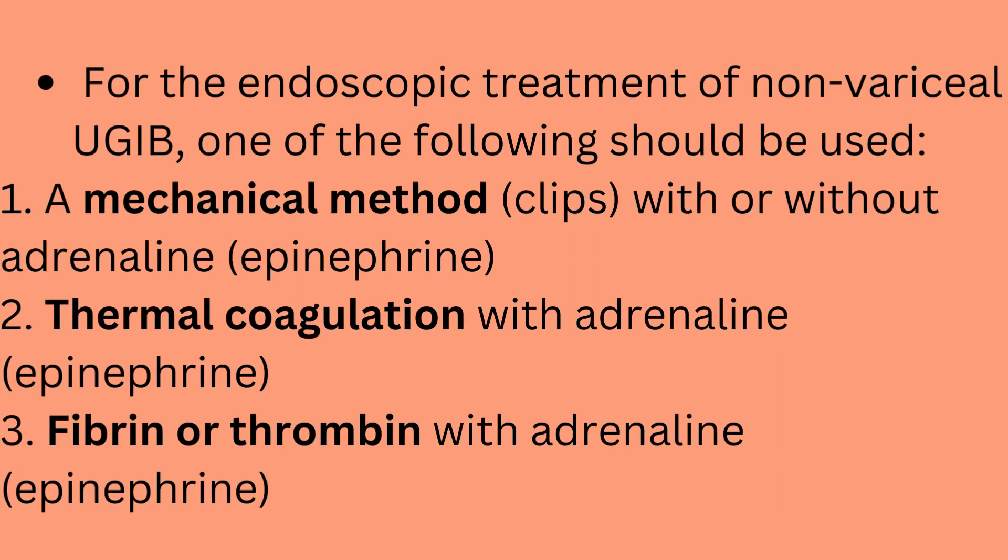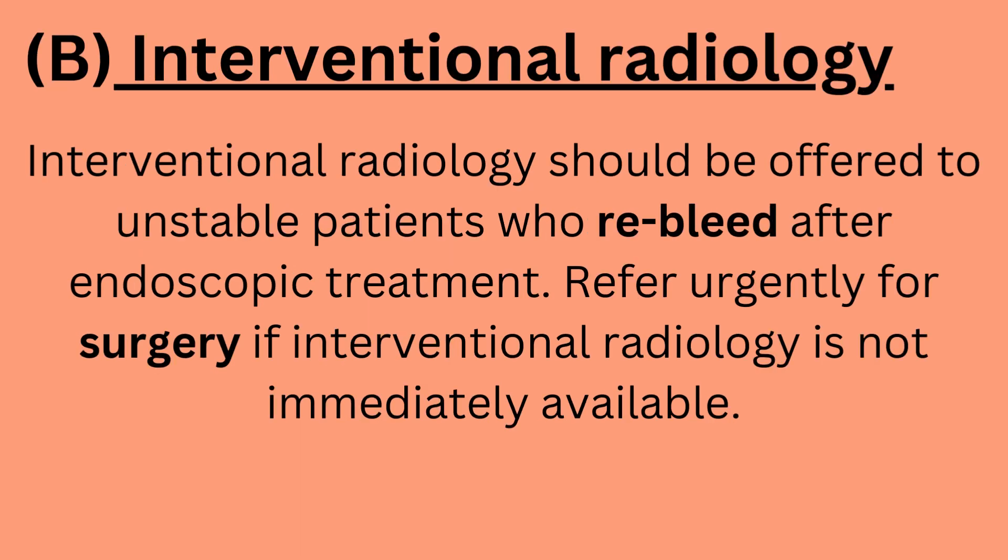For endoscopic treatment of non-variceal upper GI bleed, one of the following should be used: number one, a mechanical method — clips with or without adrenaline (epinephrine); number two, thermal coagulation with adrenaline (epinephrine); number three, fibrin or thrombin with adrenaline (epinephrine). Interventional radiology should be offered to unstable patients who re-bleed after endoscopic treatment. Refer urgently for surgery if interventional radiology is not immediately available.